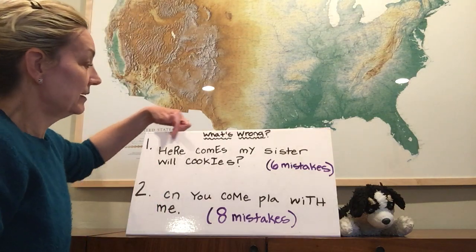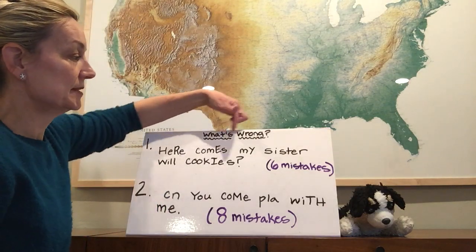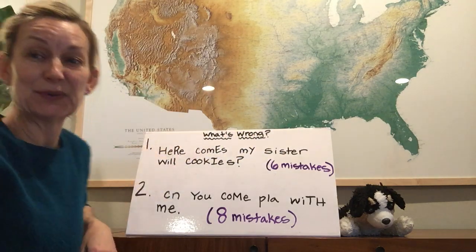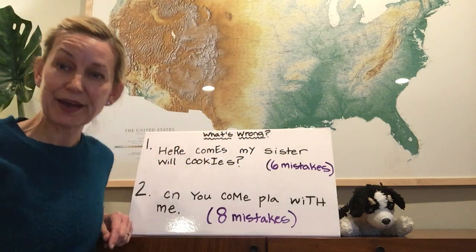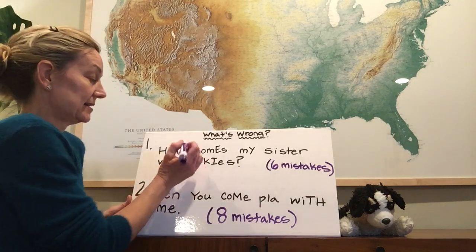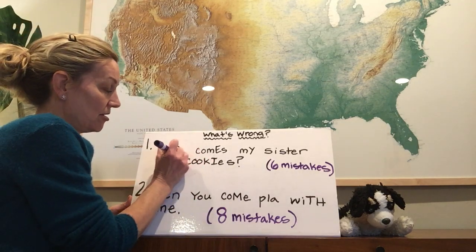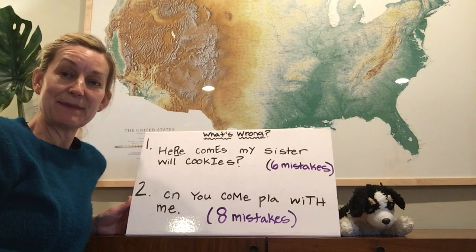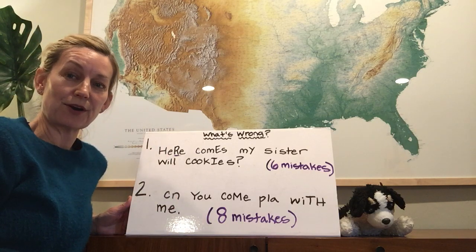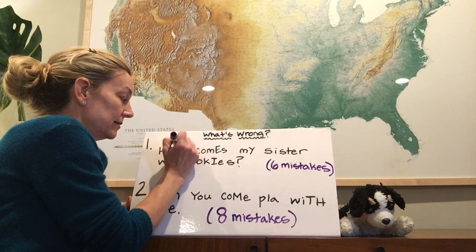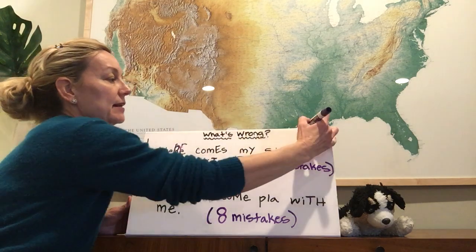The sentence read: here comes my sister with cookies. There were six mistakes here. Did you find them? The first one I see is that this R right here is an uppercase R — it's in the middle of a word. What should it be? Right, a lowercase R. There's one mistake.